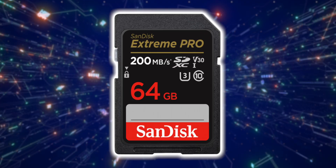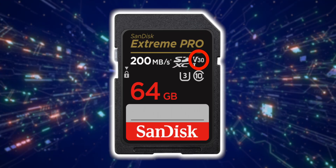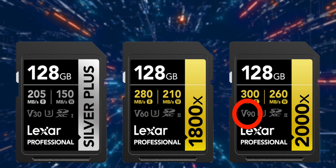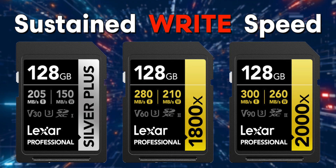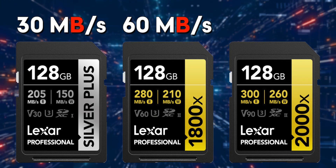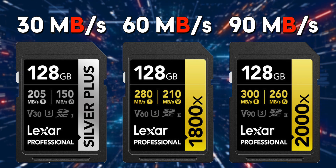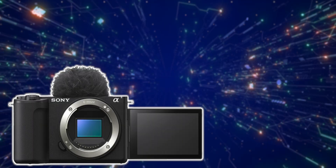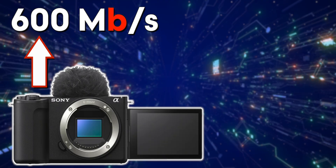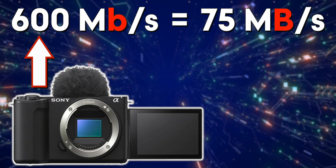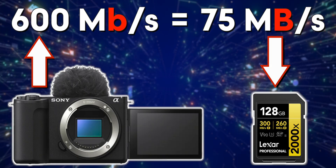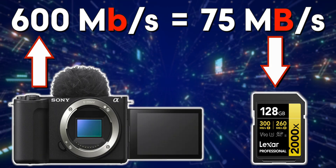Finally, that brings us to the number we care about most for video: the V speed ratings. You'll find cards rated at V30, V60, and V90, representing minimum sustained write speeds of 30, 60, and 90 megabytes per second respectively. So to shoot at the highest mode of the ZV-E10 Mark II — 600 megabits per second, which equates to 75 megabytes per second — you would need a V90 card, since a V60 card only guarantees up to 60 megabytes per second.